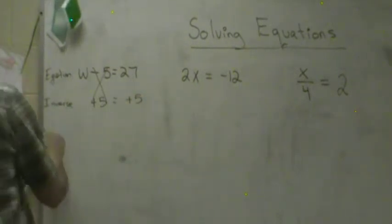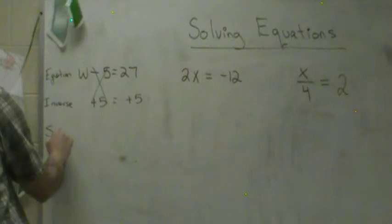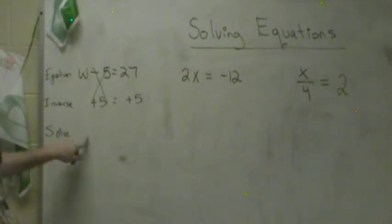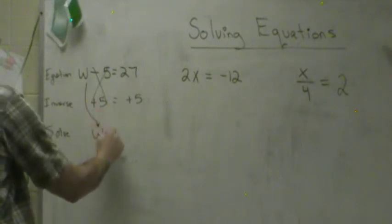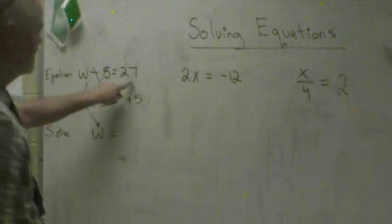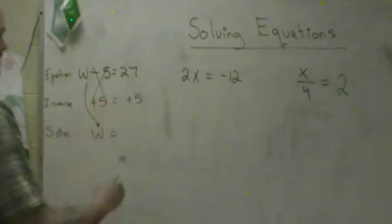Even Iguana Skin. The S stands for solve. Solve it. The only thing we've got left here is our W. Here we have to do the 27 plus 5 and we get 32.